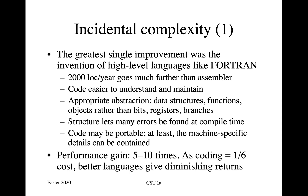Incidental complexity was the first thing that people tackled, and the biggest thing that people did to deal with it was producing high-level languages like Fortran. You've got another course in programming languages, so you're hearing the story of Fortran and COBOL and ALGOL and Pascal and so on. What do these languages do? Well, first, productivity: if you can do 2,000 lines of code per developer year, that goes an awful lot faster in Fortran than it does in Assembler. The code is easier to understand and maintain because you're using appropriate abstractions — data structures, functions, and objects — rather than bits, registers, and branches. And the structure lets many errors be found at compile time.